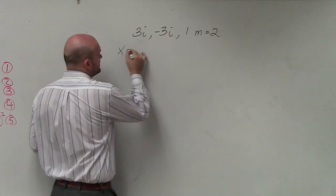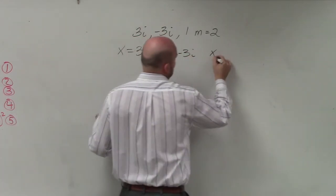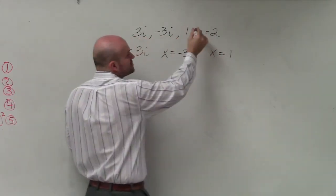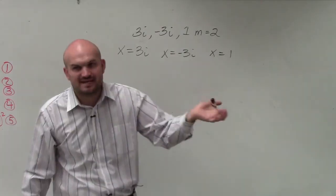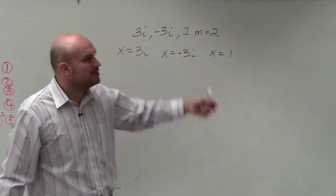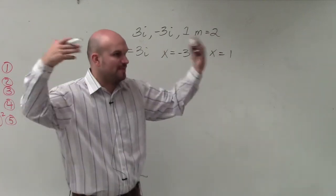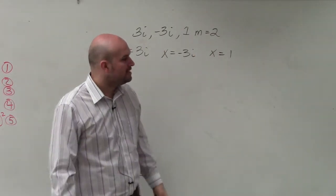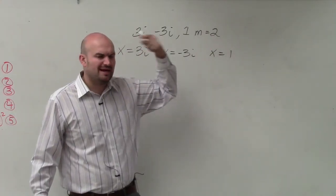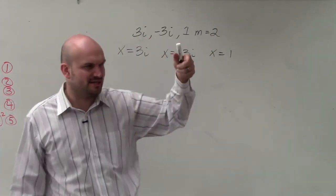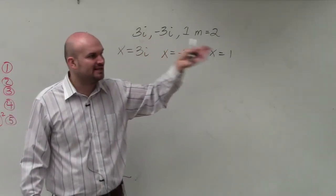The first thing I always do is write my zeros set equal to x. They said the zero was 1, but then it said m equals 2, which in this case was multiplicity equals 2. I didn't want to write it out, so I just said m equals 2, which represents the multiplicity. Remember, multiplicity only matters when we're looking at the linear factors.